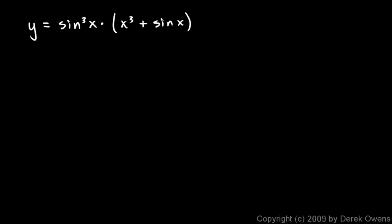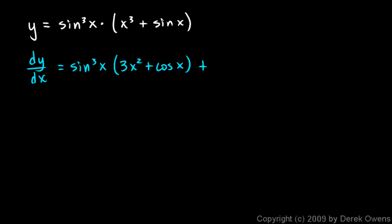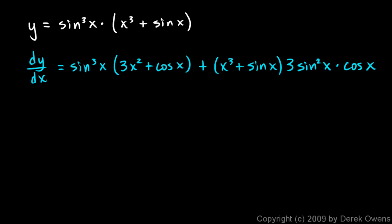Y equals sine cubed x times x cubed plus sine x, and we want to find the derivative. The derivative will be the first, that's sine cubed x, times the derivative of the second, which is 3x squared plus cosine x — just the derivative term by term — plus the second, which is x cubed plus sine x, times the derivative of the first. That first is sine x cubed, so I apply the power rule: 3 times sine x squared, then multiply by the derivative of the inner function. The inner function was sine x, so the derivative of that is cosine x.